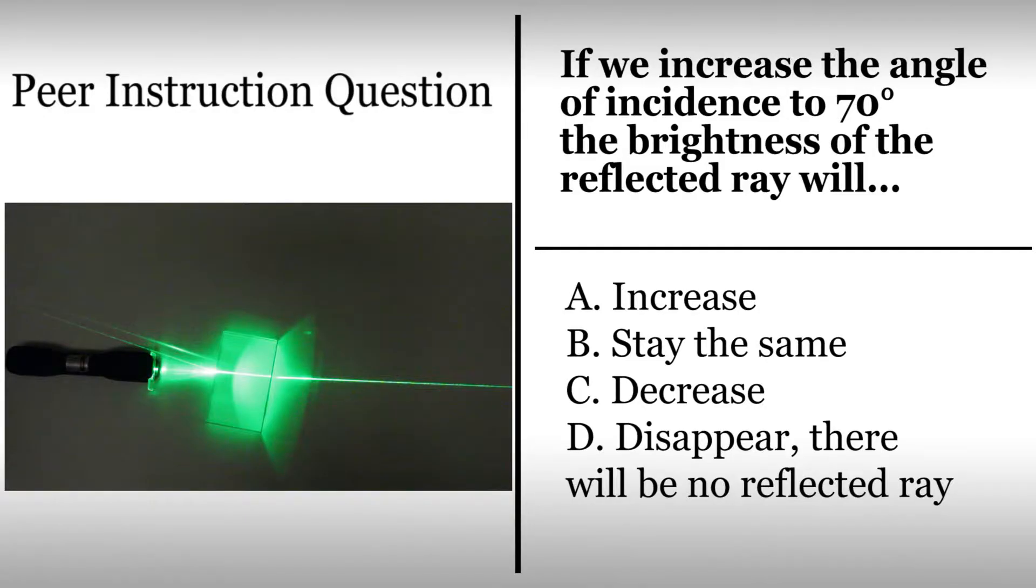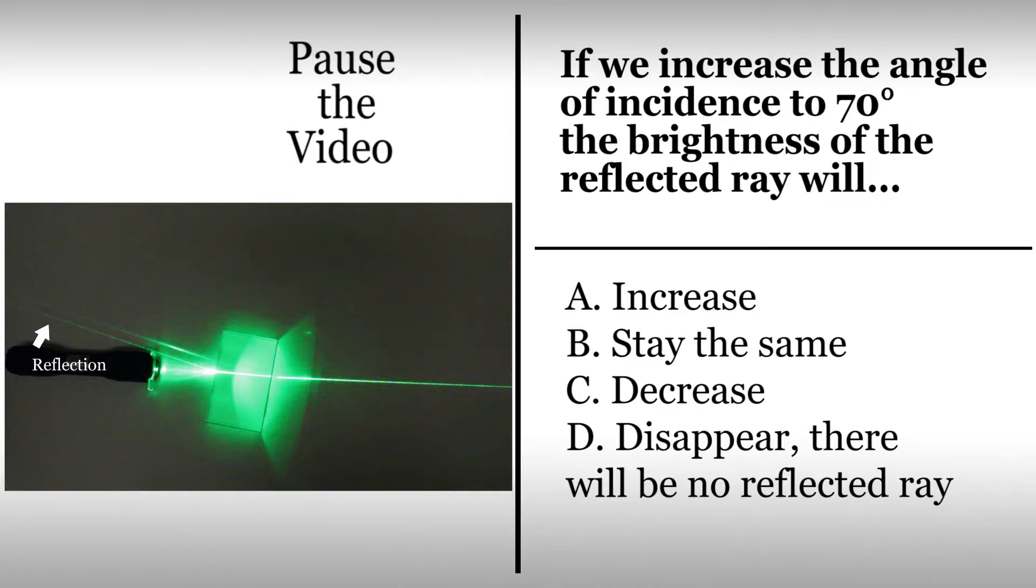Let's check your intuition related to partial reflection from everyday life. If we increase the angle of incidence, what will happen to the brightness of the reflected ray? Classroom students should follow normal procedures or instructor guidelines. Viewers not in a classroom should record your vote and explain your reasoning on a piece of paper. Please pause this video and answer the question.